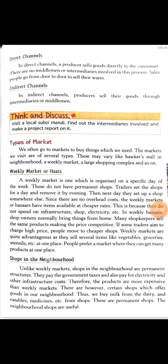Direct channel is when the producer directly sells the goods to the ultimate consumer — jab producer saman banayega aur khud consumer ko sell karega. For example, aajkal badi badi jo companies hain, apne retail outlets kholti hain. Retail outlets kya hote hain? Koi retailer alag se nahi hai. Retailer means jo kam quantity mein saman sell karta hai. Do hote hain — ek wholesaler aur ek retailer. Retailer woh hota hai jo wholesaler se purchase karke customers aur consumers ko kam-kam quantity mein sell karta hai. Jo aapke ghar ke aaspaas shops hoti hain, wo saare retailer hain.